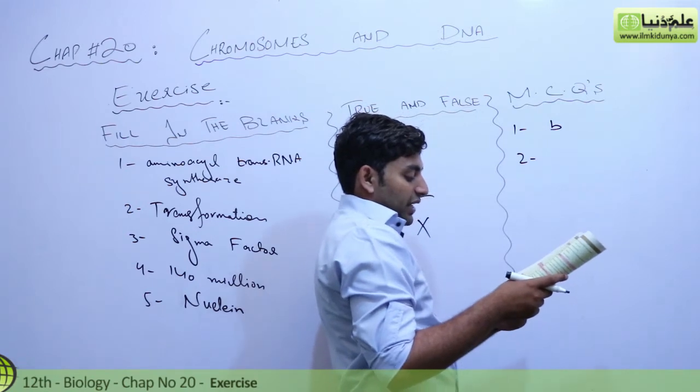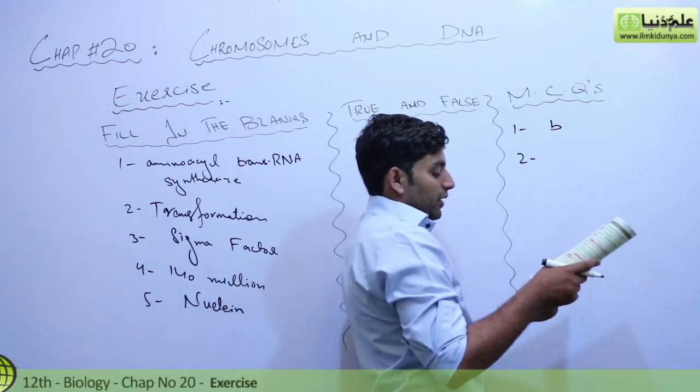Which of the following are nonsense codons? UAA, AUG, CUA, or all of the above? UAA. Answer is B.